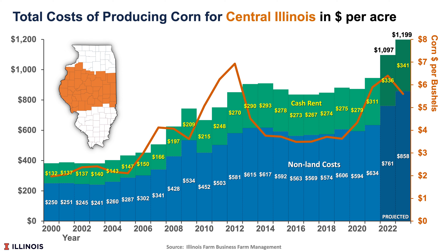We're using for 2023 a projection of $5.64 corn. However, non-land costs and cash rents have increased dramatically in the last couple of years. We have seen non-land cost increases from $634 per acre in 2021 to a projected $858 per acre level in 2023. That's over a $200 increase, and that increase is what's causing the rent on the variable cash lease to be very close to operator and land return.